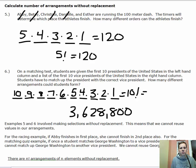These two examples involve making selections without replacement, which means we can't reuse values in our arrangements. For the racing example, if Abby finishes in first, she can't finish in second. For the matching example, once we choose George Washington's vice president, we're not going to match up George Washington with another vice president. We can't reuse George Washington, nor can we reuse any of the vice presidents. So, we say there are n factorial arrangements of n elements without replacement.